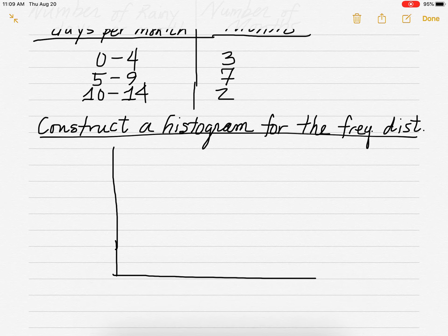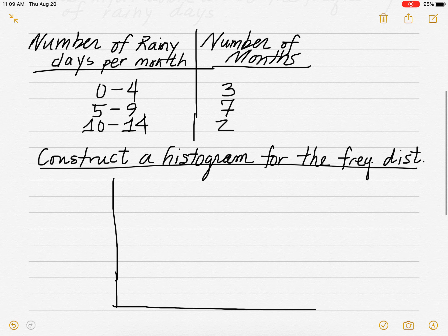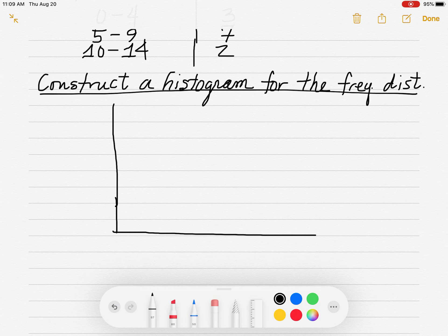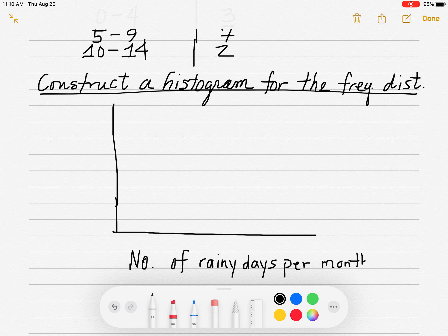So along the horizontal axis, you're going to put your classes, which is number of rainy days per month. So I'm going to label that. So make sure you label this. Number, N-O for short, number of rainy days per month. Now these are the classes. Putting classes in parentheses.